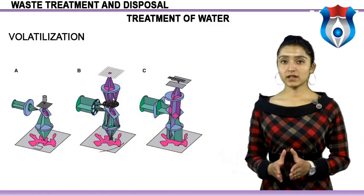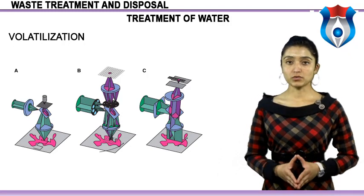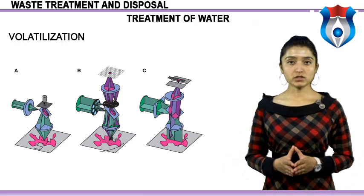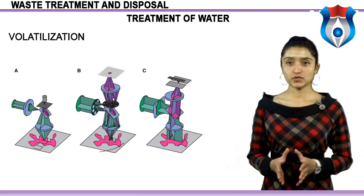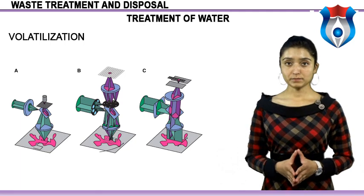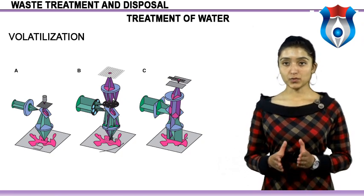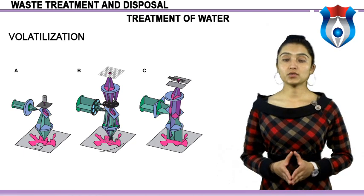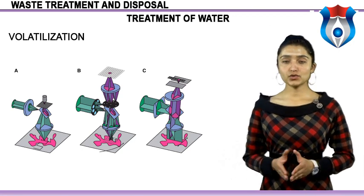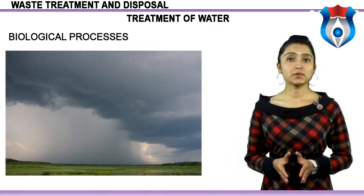Volatilization: volatile organic carbon compounds (VOCs) can be removed from water by lowering the partial pressure of the compound in the vapour in contact with the water. When the partial pressure of dissolved VOCs in the water exceeds that of its vapour pressure, the compounds will come out of solution and enter the vapour phase. Perhaps the most common method is air stripping, where air and water are passed through a containment vessel in counter-current flow and VOCs evaporate into the air. The removal of VOCs can be enhanced by heating the air or by using steam, because higher temperatures increase vapour pressure.